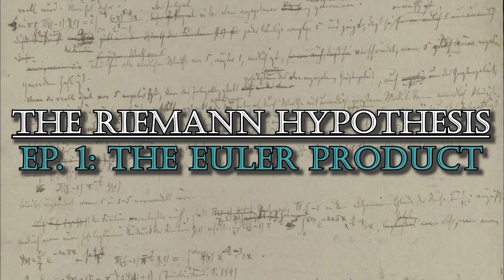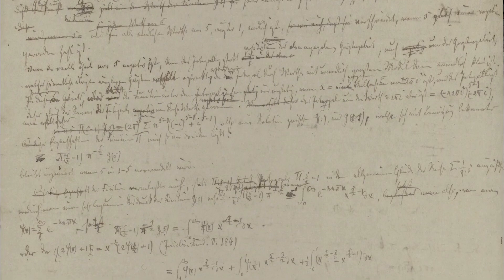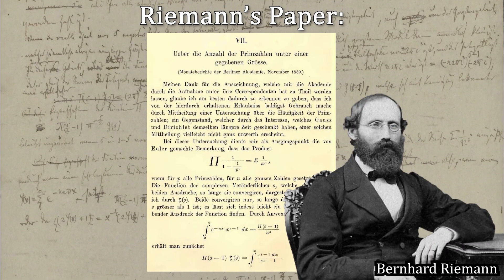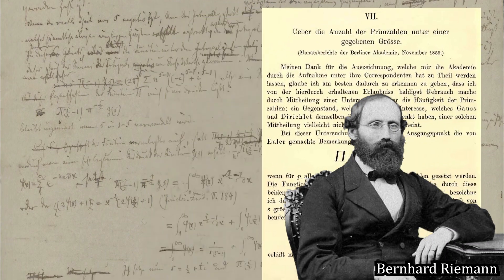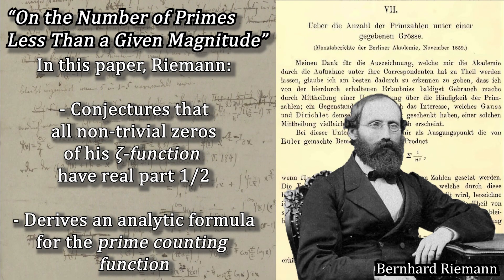In 1859, mathematician Bernhard Riemann published his one and only paper on number theory. This paper was called On the Number of Primes Less Than a Given Magnitude. It was in this paper that Riemann conjectured the now famous Riemann hypothesis.